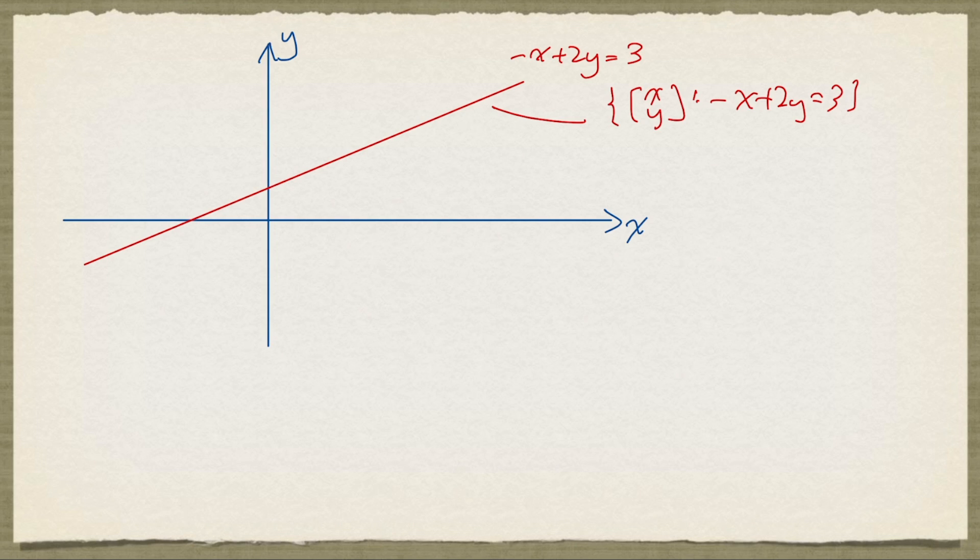It is possible to obtain a parametric form for all the points on this red line. And the key is to solve this equation.